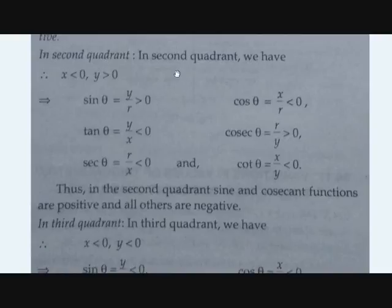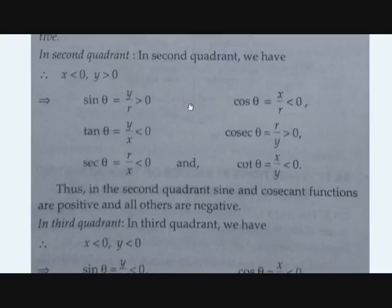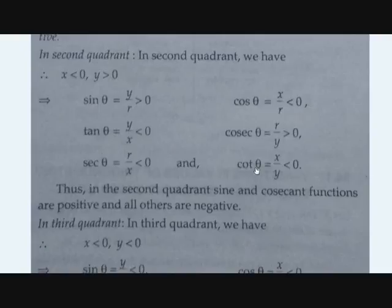In the second quadrant, X is less than zero and Y is greater than zero. So sine theta, which depends on Y, is greater than zero. Cos theta, which depends on X, is less than zero, so it is negative. Tan theta is Y by X — Y is positive but X is negative, so tan theta is less than zero. Cosecant is greater than zero, secant is less than zero, and cot is less than zero. So in the second quadrant, sine and cosecant are positive and the rest are negative.